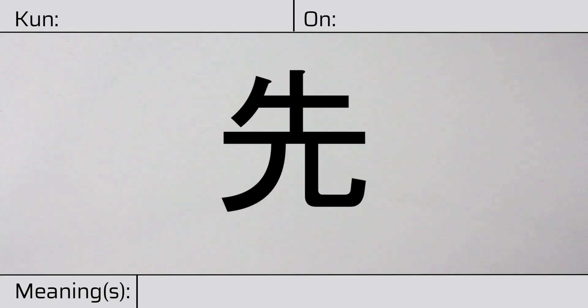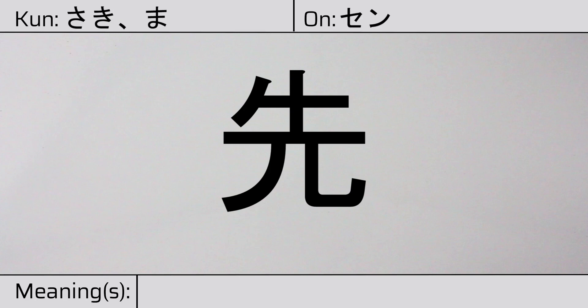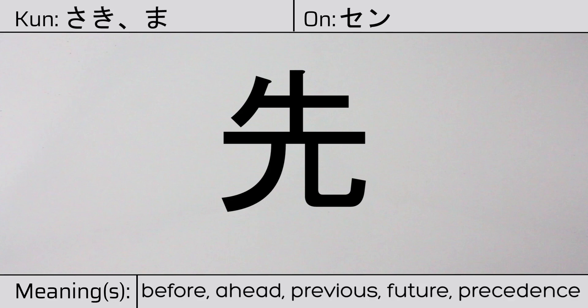Welcome to this lesson on Japanese kanji. Today, we'll be discussing this character. This kanji has kunyomi, or Japanese readings of saki or ma. And it has an onyomi, or Chinese reading of sen. This character has the meanings before, ahead, previous, future, or precedence.